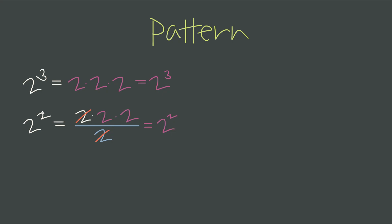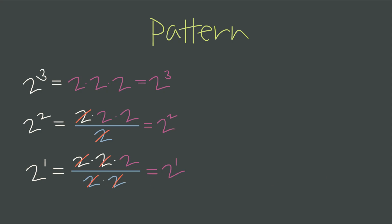Using this pattern, if we want to step the exponent down one more and write 2 to the first, we could write it as 2 times 2 times 2 divided by 2 factors of 2. Then we get 2 factors of 2 to cancel from both the numerator and denominator, leaving us with just the single factor, or 2 to the first power.